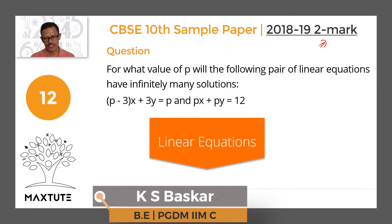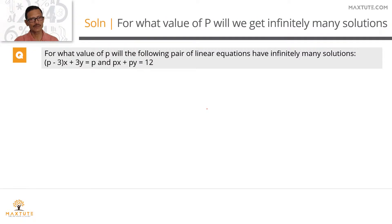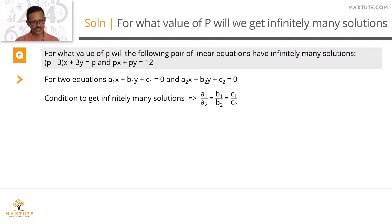For what value of p will the following pair of linear equations have infinitely many solutions? We have been given two equations in two variables. The only concept we need to know to solve this question is when will a system of linear equations in two variables have infinitely many solutions.